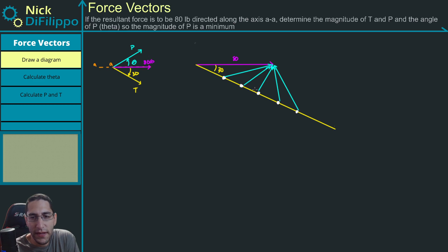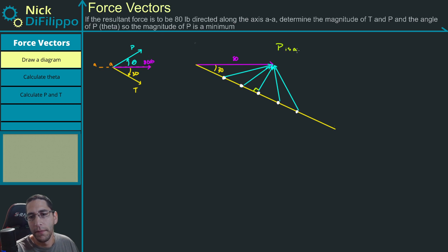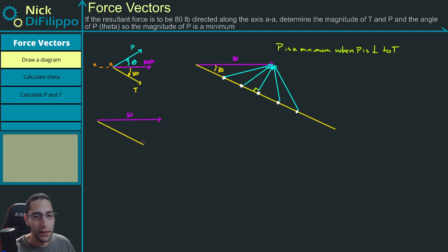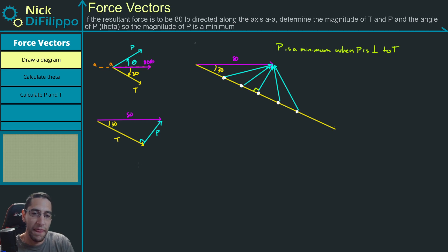It turns out that P is always going to be the shortest value when we look at the perpendicular line. P is a minimum when P is perpendicular to T. So let me draw this again: this is my 80-pound force, this is my value of T at 30 degrees, and then I have a perpendicular angle of P with T. This represents the triangle I want to solve.